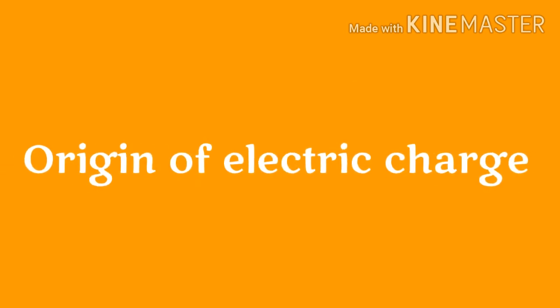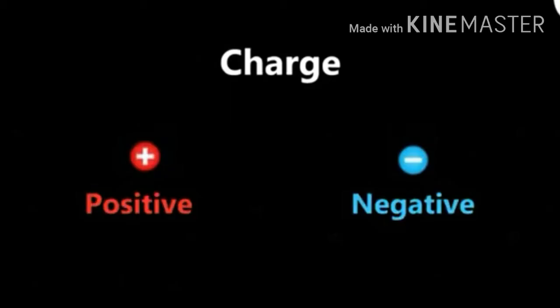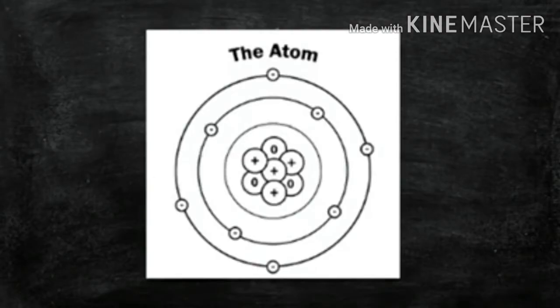The origin of an electric charge: all substances are made up of particles, and these particles are ultimately made up of very tiny atoms. Each atom contains a stationary positive charge and moving negative charges. These two charges being perfectly balanced, an atom is electrically neutral. All objects are made up of atoms, which means they are electrically neutral.